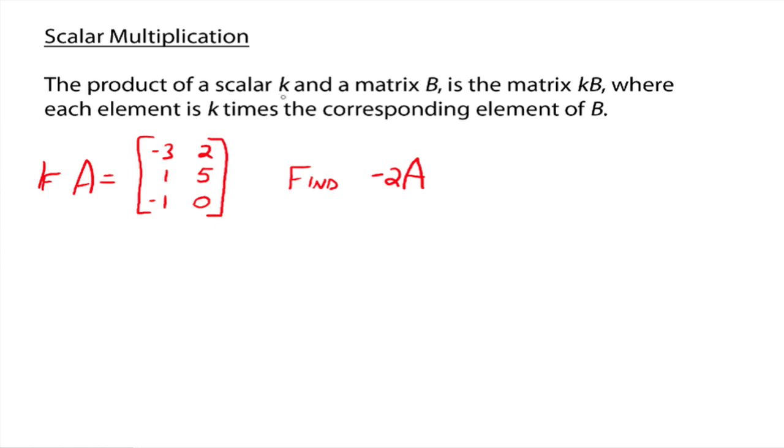The product of a scalar, a real number K, and a matrix B is this new matrix, K times B, where each element of that matrix is K times the corresponding element of your matrix B.